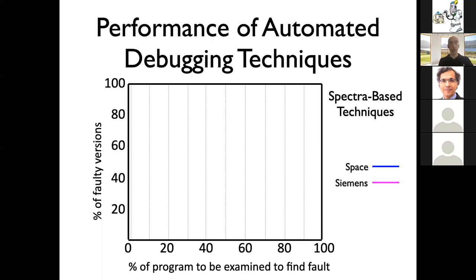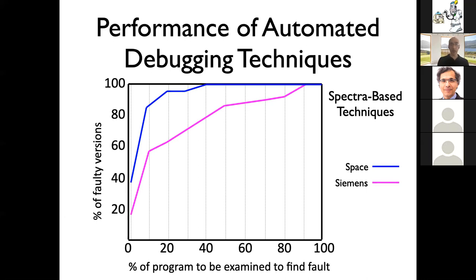On the y-axis you see for how many versions this happens — basically for how many bugs you have to examine that much of the program. If you focus on the results for the space program, you can see that for over 80% of bugs considered, you only have to look at 10% of the program to find them. On paper, that's great — it means you have a fully automated technique that lets you find the bug by looking at just 10% of the program.